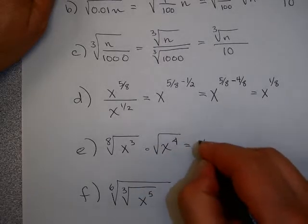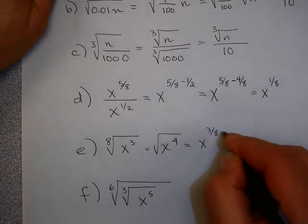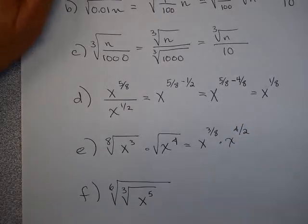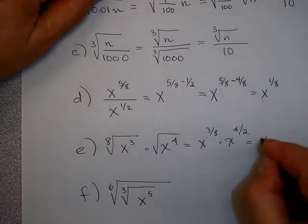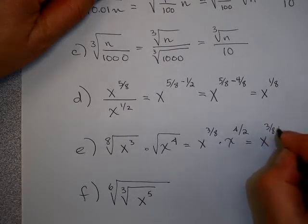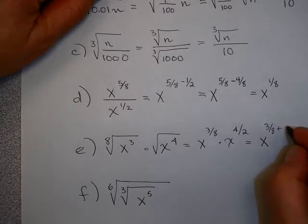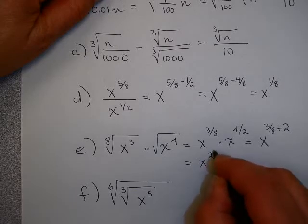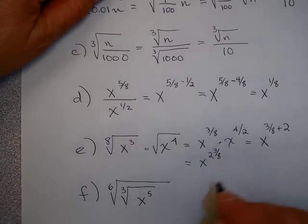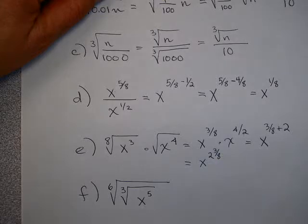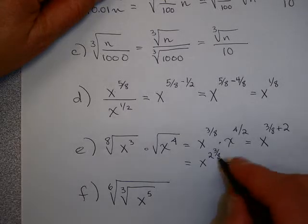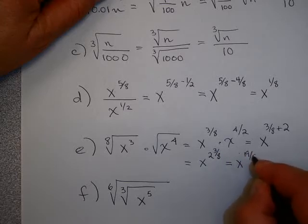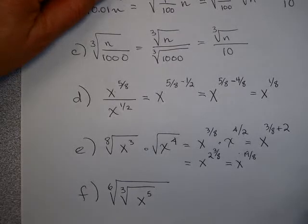This one is x to the 3 eighths times x to the 4 halves. If you think about this, this is x to the 3 eighths plus x to the 4 halves. Well, x to the 4 halves is just 2. So this is x to 2 and 3 eighths. If I write that as an improper fraction, I have 2 times 8 is 16 plus 3 is 19 eighths.